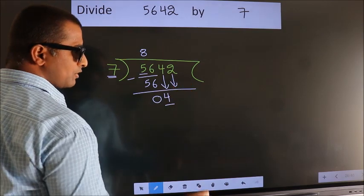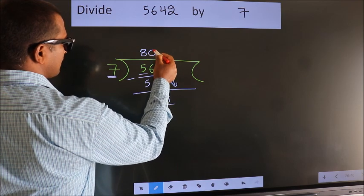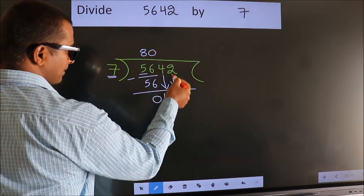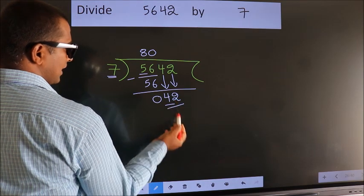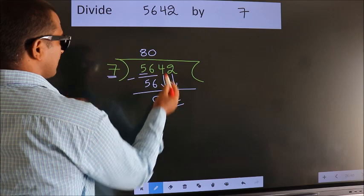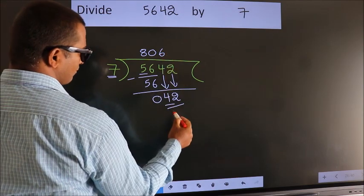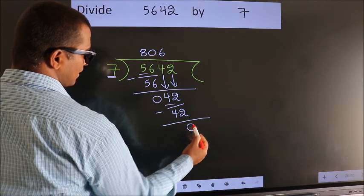So we should bring down the second number. And the rule to bring down second number is put 0 here. Then only we can bring down this number. So 42. When do we get 42? In 7 table. 7 six 42. Now we subtract. We get 0.